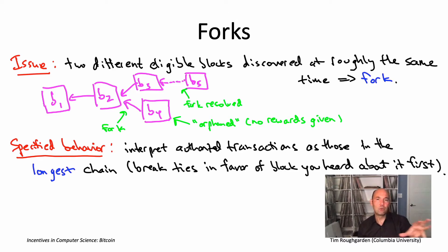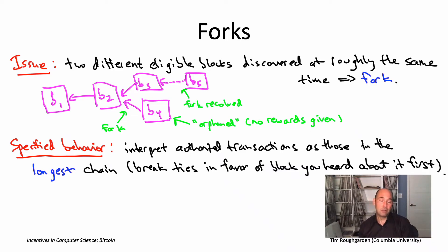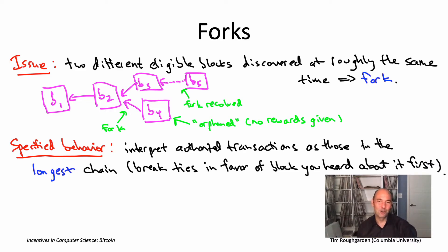One little difference between Bitcoin and Ethereum — the second most well-known blockchain — is that Ethereum actually does give some rewards for orphans. But in Bitcoin, if your block is orphaned, you get nothing. No reward for all of the work you put in to putting it together.